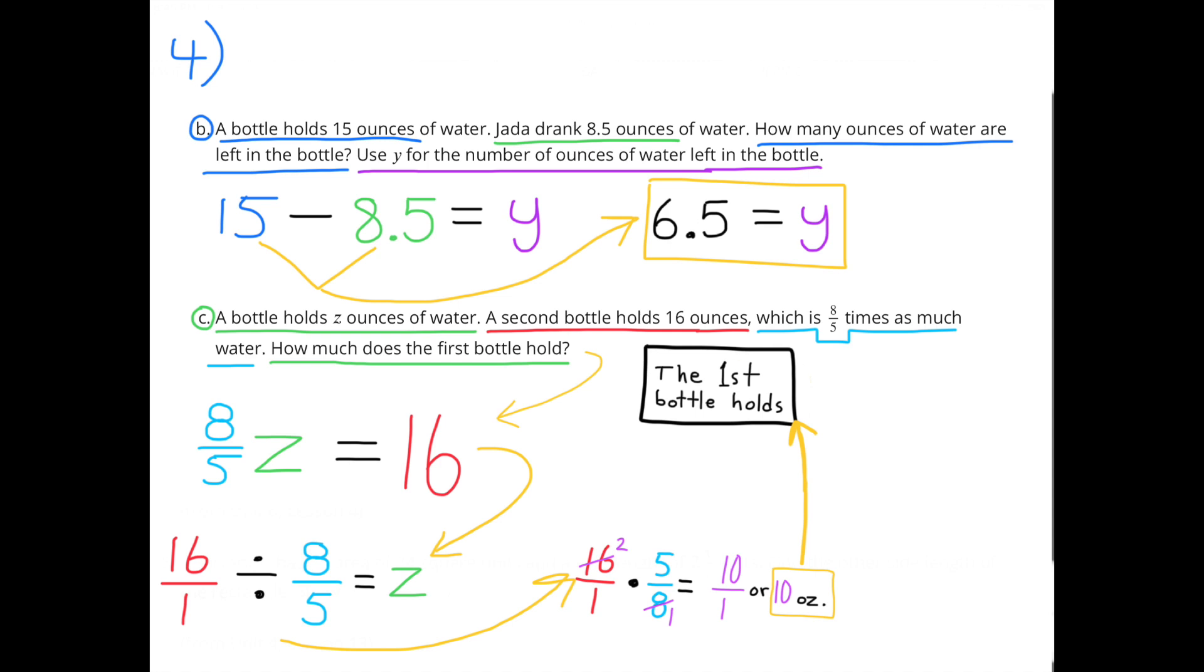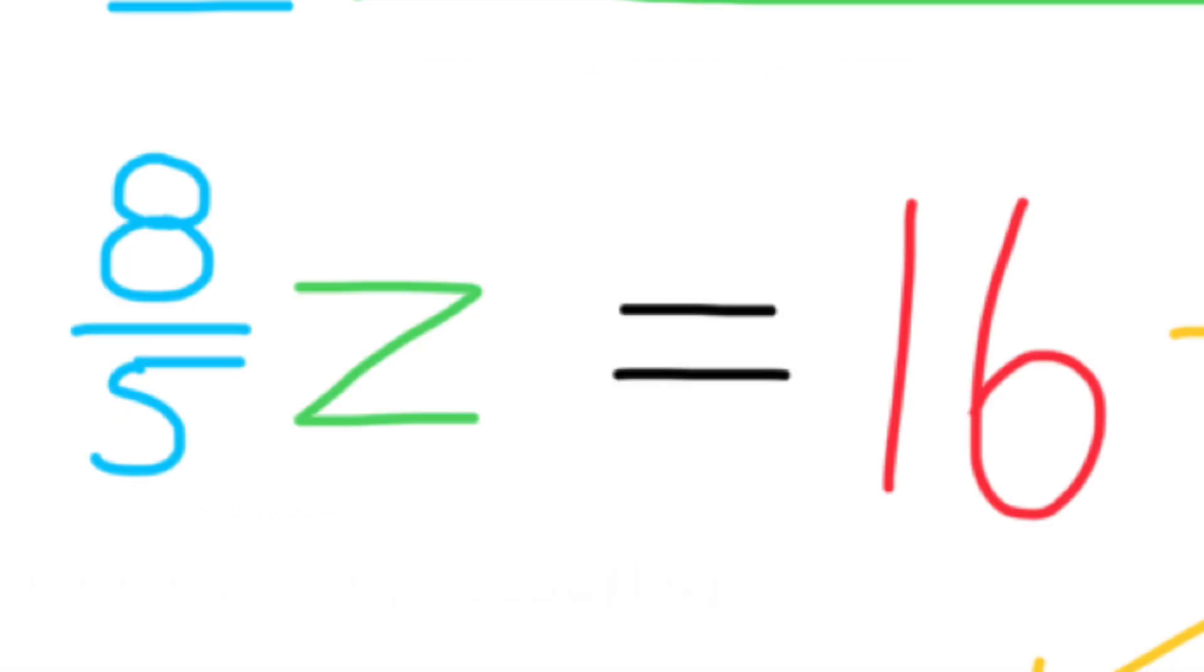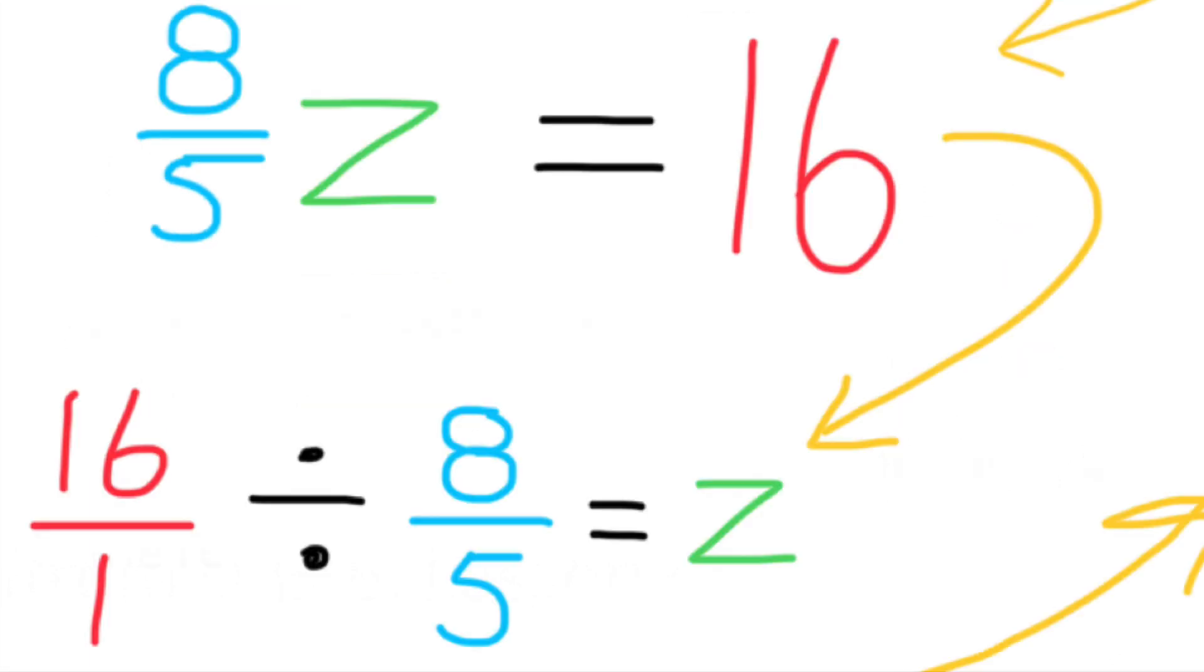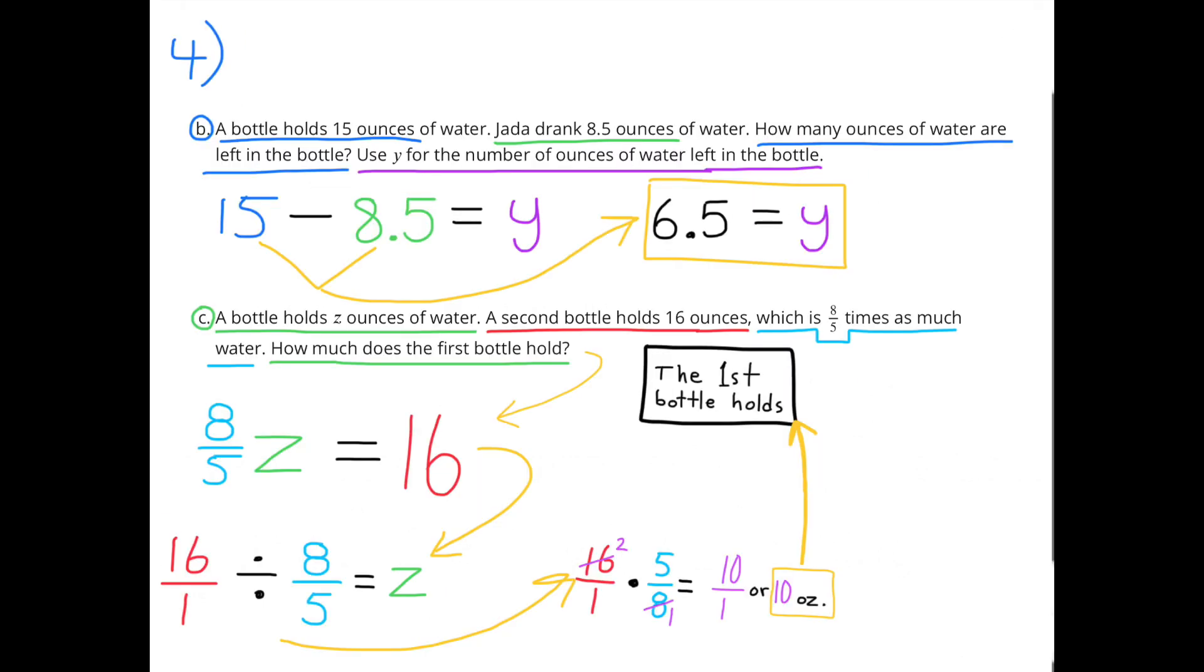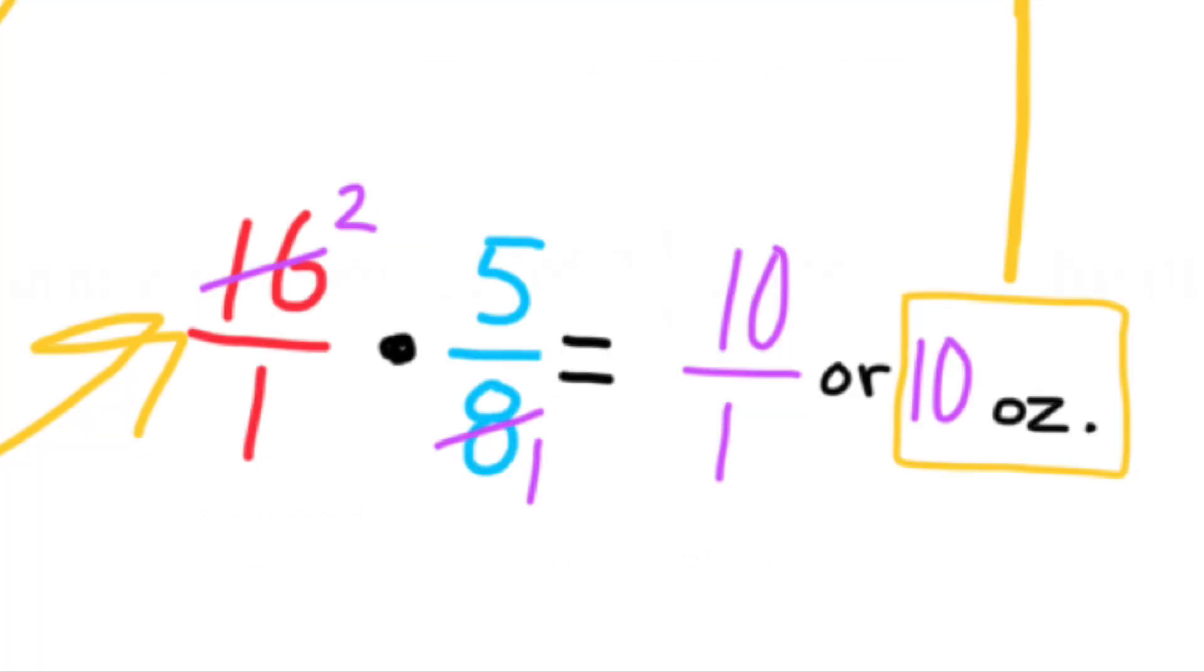C. A bottle holds Z ounces of water. A second bottle holds 16 ounces, which is eight-fifths times as much water. How much does the first bottle hold? Eight-fifths Z, or eight-fifths times Z, equals 16. We can solve for Z by dividing 16 by eight-fifths. So 16 divided by eight-fifths will equal Z, or the amount that the first bottle holds. We can do this by multiplying by the reciprocal of eight-fifths. 16 times five-eighths equals 10. The first bottle holds 10 ounces of water.